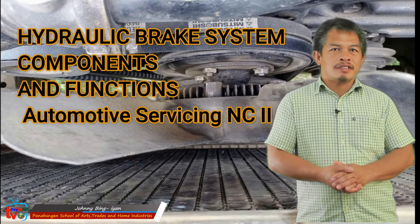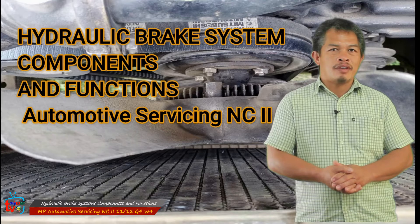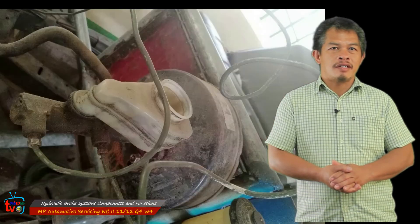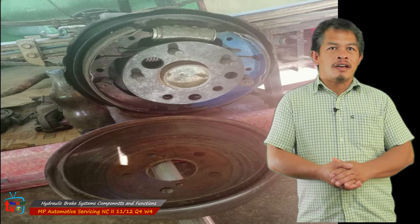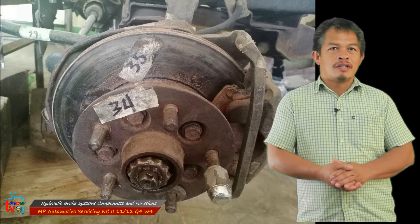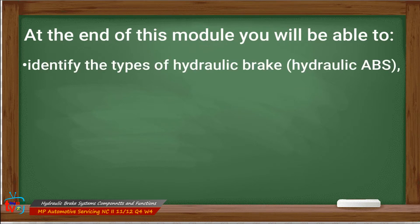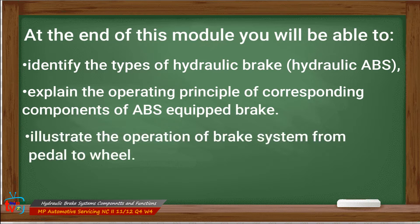Good day, future automotive servicing technicians. This is Teacher Janik. Today we will discuss hydraulic brake system components and functions. The typical brake system consists of disc brakes in front and either disc or drum brakes in the rear, connected by a system of tubes and hoses that link the brake at each wheel to the master cylinder. Other systems connected to the brake system include the parking brakes, power brake booster, and anti-lock system. At the end of this module, you will be able to identify the types of hydraulic brake and hydraulic ABS, explain the operating principle of corresponding components of ABS-equipped brakes, and illustrate the operation of the brake system from pedal to wheel.